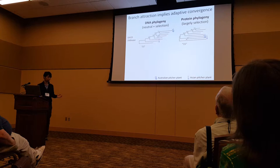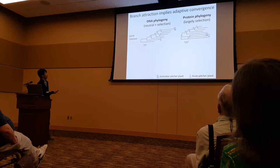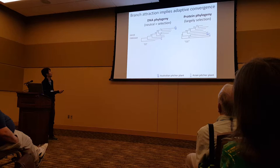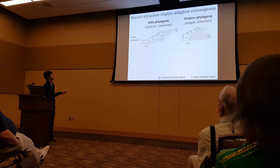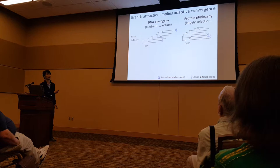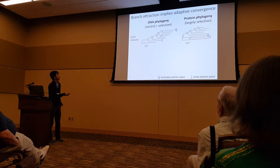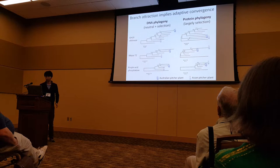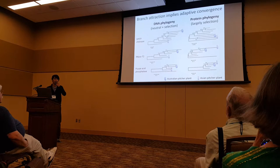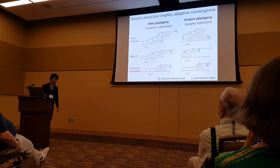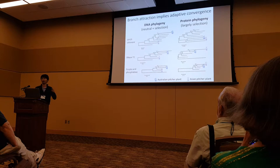We also analyzed the evolution of coding sequences, and during phylogenetic analysis we found something interesting. This is a really simplified phylogeny of GH19 chitinases. The Australian and Asian pitcher plants have independent origins, and as expected from species relationships, they are positioned in really distantly related positions. But when we used the protein sequences, they formed sister clades. We found a similar trend in three different gene families: ribonucleases, T2 and purple acid phosphatases. We hypothesized that they experienced similar selective pressure so that they accumulated the same type of amino acid substitutions.